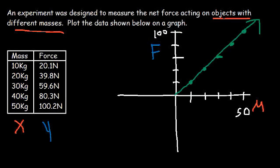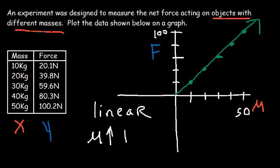What kind of relationship do we see between the force and the mass? Is it linear, quadratic, or inverse? We have a linear relationship, since we have a straight line. This is a proportional or direct relationship — we could say that the force varies directly or proportionally with the mass. So as the mass increases, the force increases.